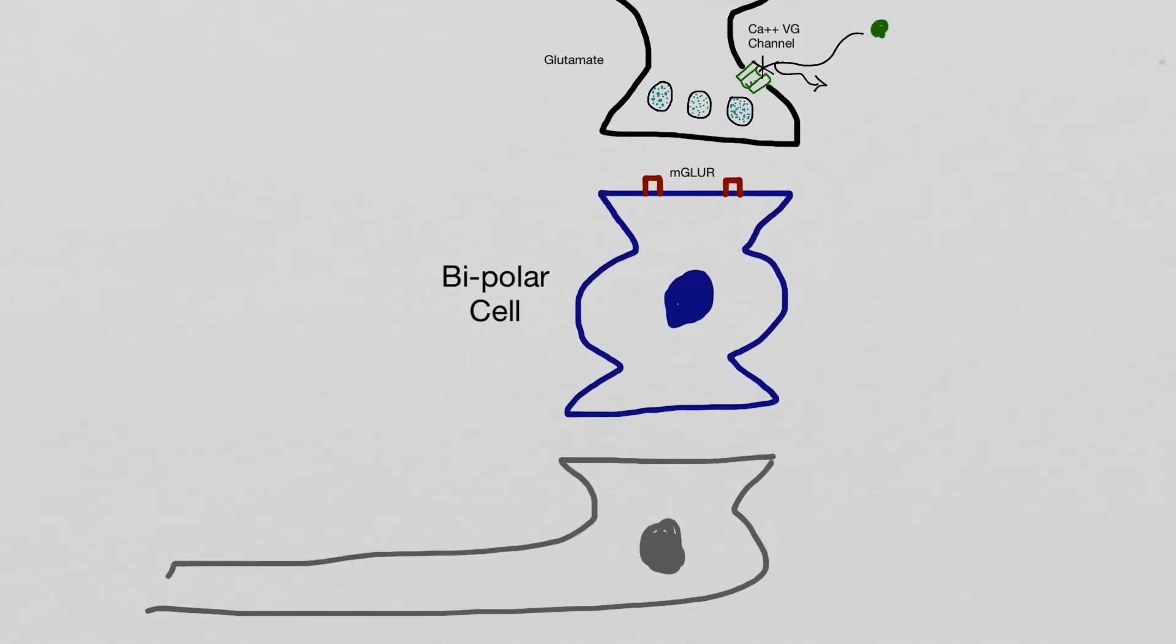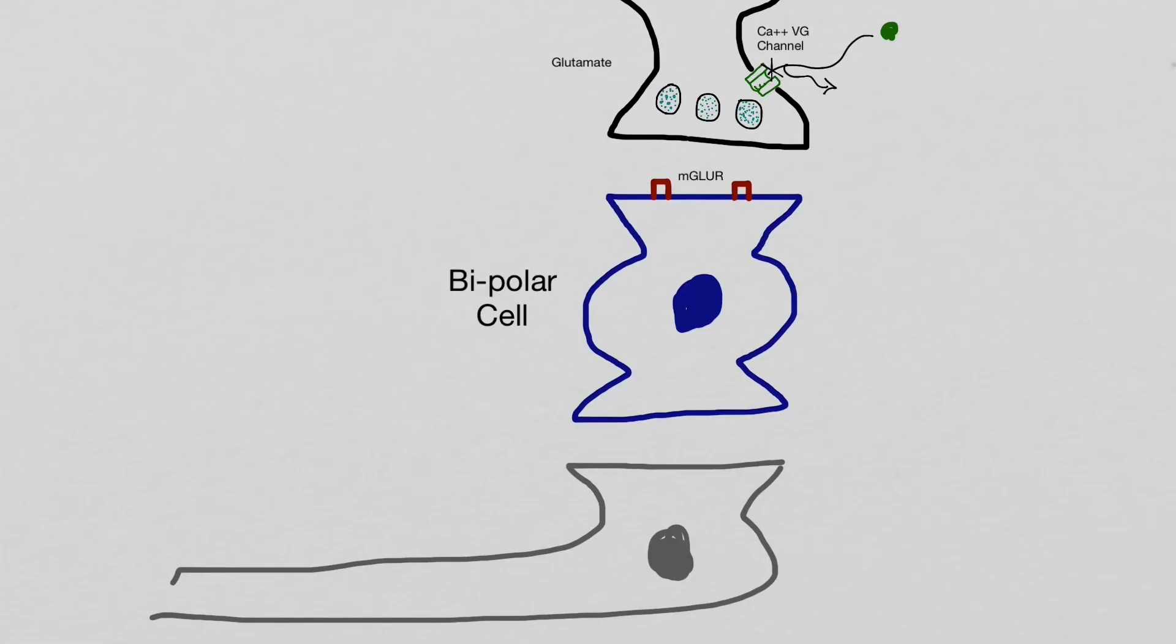This allows the bipolar cell to activate the next cell in the process and send an action potential to the brain to show the image of the light received. This has been a brief overview of the physiology of a rod photoreceptor, and I hope it helps you.